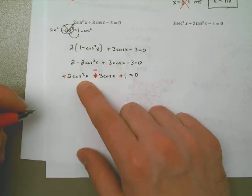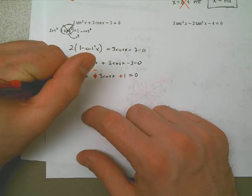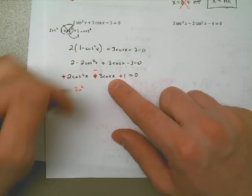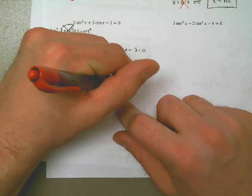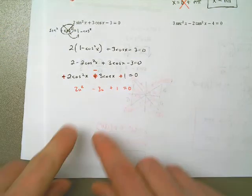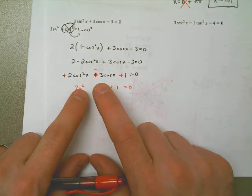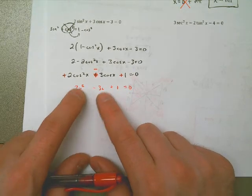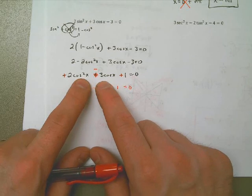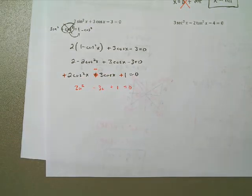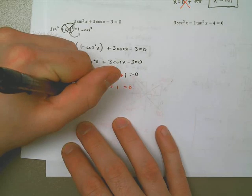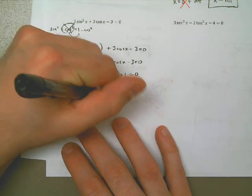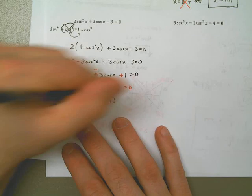If I can factor this equation, that means I can factor the equation with cosines. Without going through the full process — that's another lesson entirely — it turns out this ends up being (2u − 1)(u − 1). You can check my work on that. That means the cosine equation must factor as (2 cosine x − 1)(cosine x − 1). We treat it in exactly the same fashion.